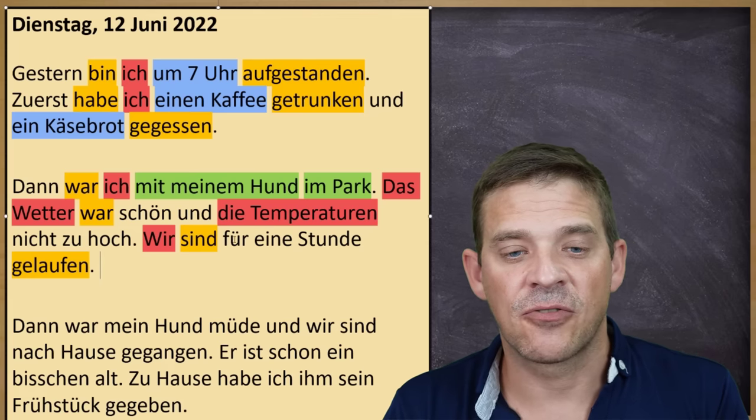Nach der Arbeit habe ich eingekauft — After work I went grocery shopping. Einkaufen means to buy groceries. Das Subjekt ist ich, habe ist das Hilfsverb, eingekauft ist das Partizip von einkaufen. Nach der Arbeit — again we have the preposition nach, always plus dative, therefore der Arbeit is also in dative.